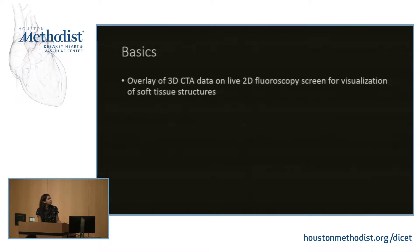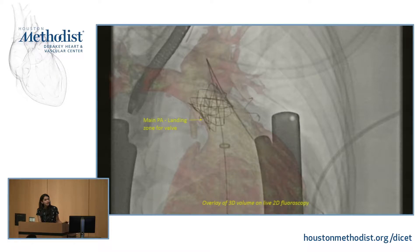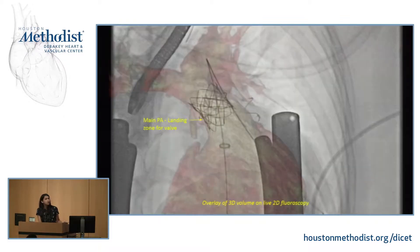So what is CT fluoroscopy image fusion? It basically allows you to overlay 3D CT data onto live 2D fluoroscopy. The end result is one of two things. You can achieve overlay of the 3D volume onto live 2D fluoroscopy — this is a patient with tetralogy of Fallot who presented with pulmonic regurgitation and needed transcatheter pulmonary valve replacement. Image fusion provides an overlay of the 3D data onto fluoroscopy, giving a really good idea about the landing zone for the stent.